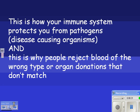This is how your immune system protects you from pathogens or disease-causing organisms. This is also why people reject blood of the wrong type or organ donations that don't match. If you get a kidney from someone else and it has foreign antigens, your body will attack it, reject it, and you won't have the kidney anymore.